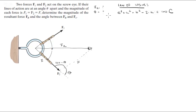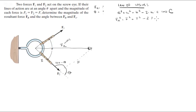Now follow my trail of thought here. C is going to be FR, and A and B are both F — they're interchangeable. So FR squared equals F squared plus F squared minus 2 times F times F times cosine of 180 minus theta.